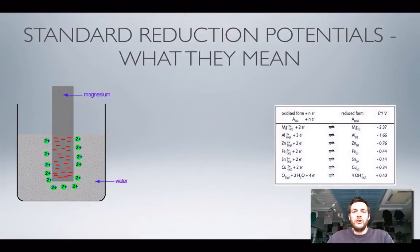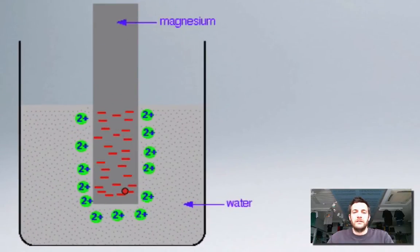So if we try and understand what these numbers that we can look up actually mean, let's imagine what happens if we place a strip of metal into a beaker of water. In this diagram we've got a piece of magnesium that's been placed in water. As magnesium dissolves, as some of the magnesium atoms turn into magnesium 2+ ions, they'll leave their electrons behind on the strip of metal and we'll end up with magnesium ions in solution and electrons on the strip of metal.